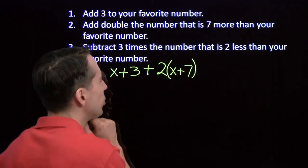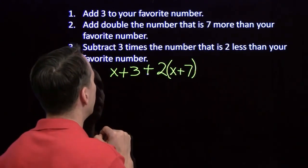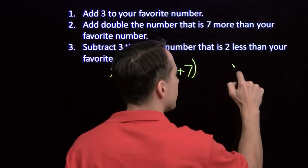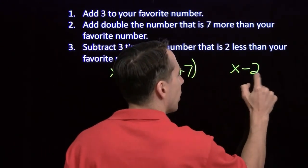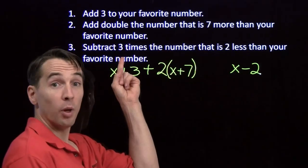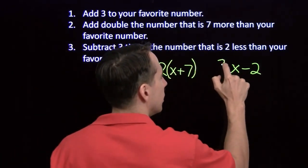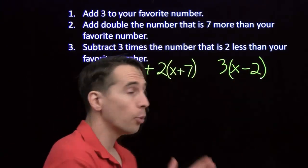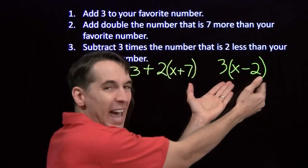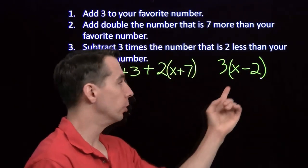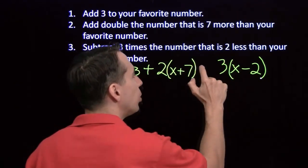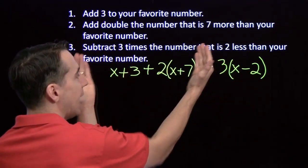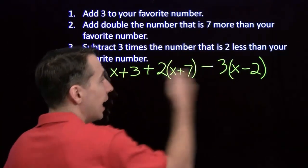Three times the number that is 2 less than your favorite number. All right, so we'll start with 2 less than our favorite number. That's X minus 2. Then we want 3 times that. And again, we have to remember the parentheses. Parentheses are very important, because we're tripling what we get after we subtract 2 from our favorite number. And then we're going to subtract that from what we had at the end of step 2. And that's our number!